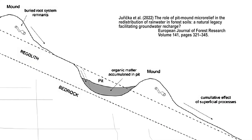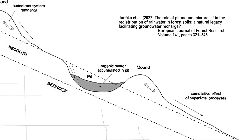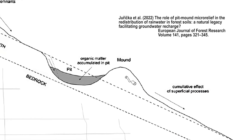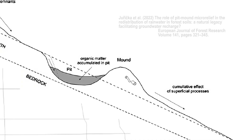Pits formed by root plates collect rainwater and increase seepage to the underground. These pits also provide micro-habitats to moisture-loving organisms.